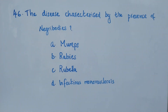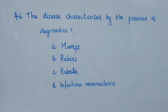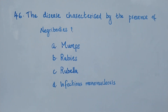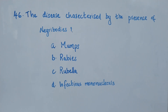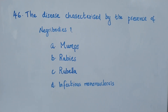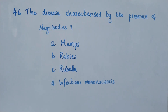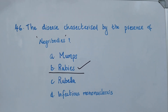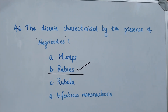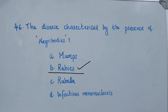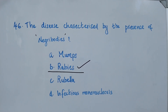Question number 46. The disease characterized by the presence of Negri bodies. Option A: mumps. Option B: rabies. Option C: rubella. Option D: infectious mononucleosis. Which of the following diseases is characterized by Negri bodies? The right answer is option B, rabies. Negri bodies are inclusion bodies produced by the rabies virus.